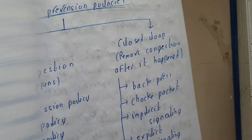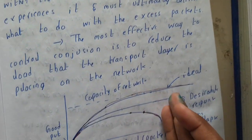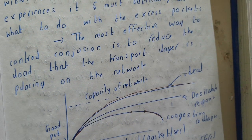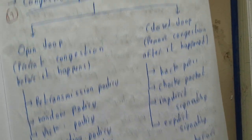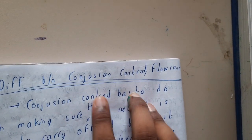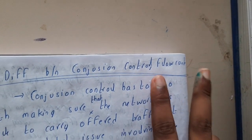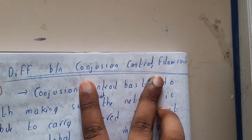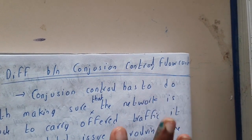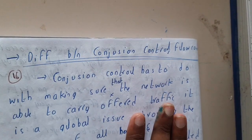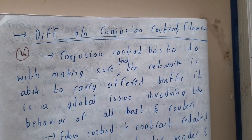Since performance degrades, we need a solution, which is nothing but congestion control algorithms — we'll be discussing those in our next lectures. In the next lecture we'll also go through the differences between congestion control and flow control, as most students think both are the same. Thank you for watching.